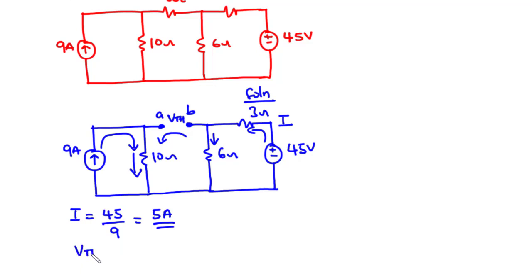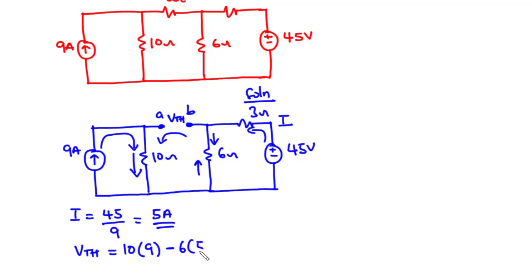Vth equals 10 times 9, because we have the 9 amperes current moving in the direction we took, so that is positive. Minus 6 times I, which is 5 amperes, because we are moving in the anti-clockwise direction and that opposes the flow of current in the 6 ohms resistor. Therefore Vth equals 90 minus 30, which equals 60 volts.